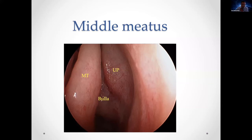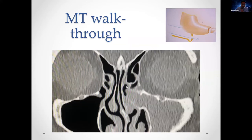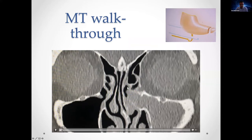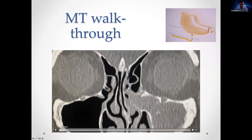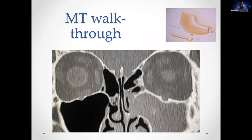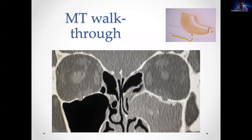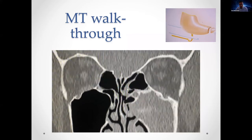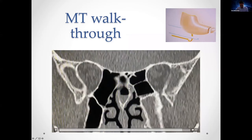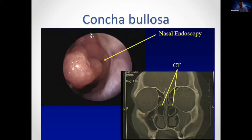An endoscopic view shows the middle turbinate and uncinate process with the bulla just behind. On CT scan, the middle turbinate attachment on the right side is to the skull base, particularly to the cribriform plate and lateral cribriform lamella. Going posteriorly, you can see that transition as the attachment moves to the lateral nasal wall, and the superior turbinate can be seen arising at the same time.